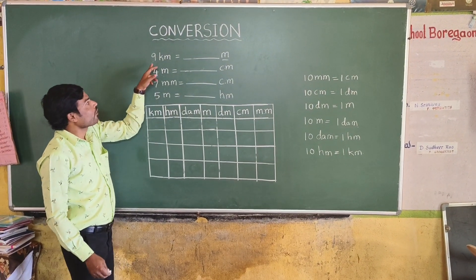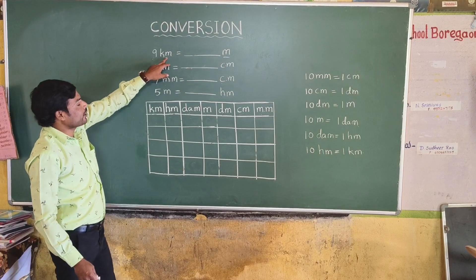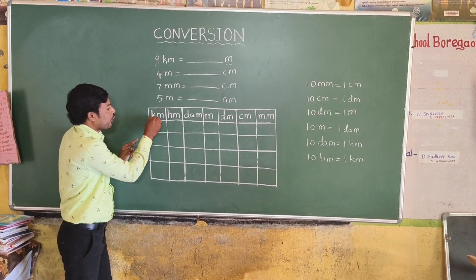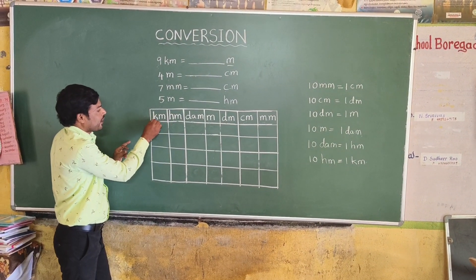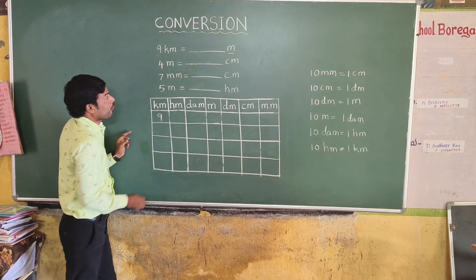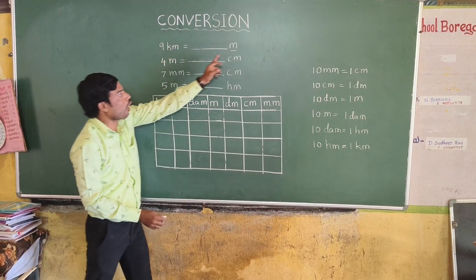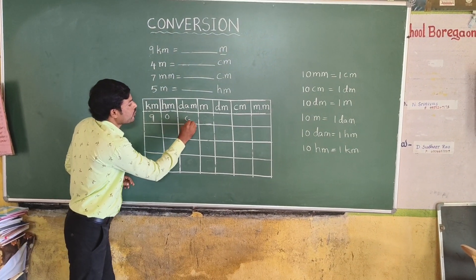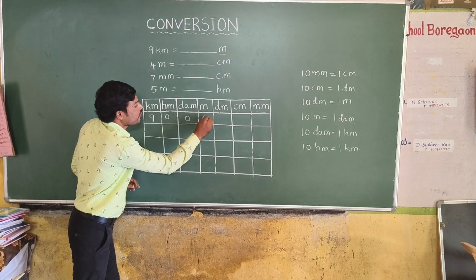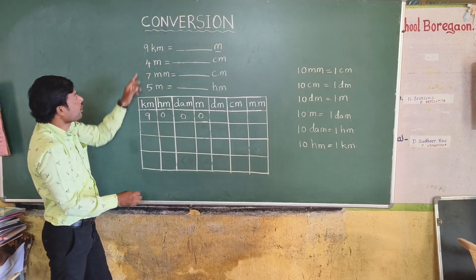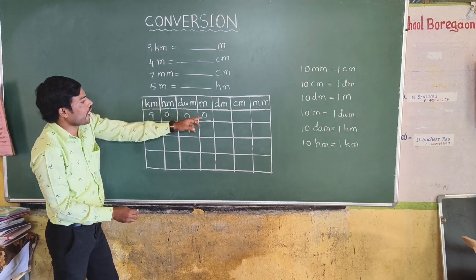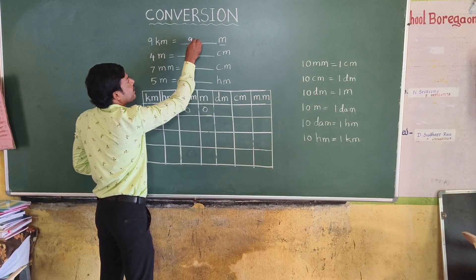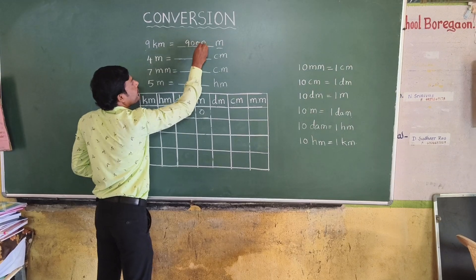Very good. Now, 9 kilometers. Where is the 9? Where is the kilometer? 9 kilometers is equal to how many meters? 9 kilometers is equal to 9,000 meters.